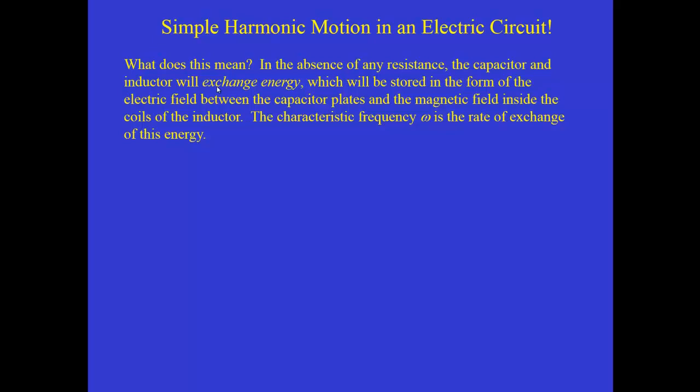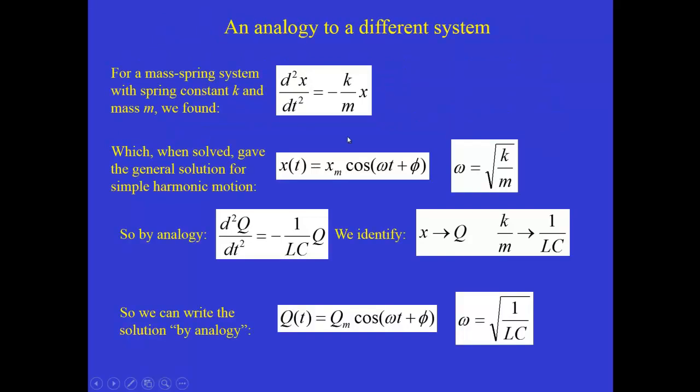Initially, all the energy is in the capacitor stored in the presence of its electric field. Then the charge flows off and it goes all the way down to zero. But at that point, the energy now has been transferred into the inductor in the presence of its magnetic field. And then the charge flows back again.